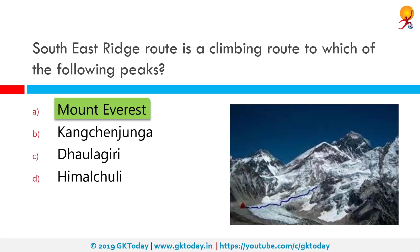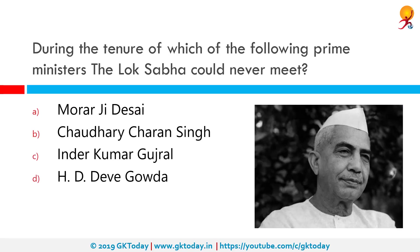During the tenure of which of the following prime ministers could the Lok Sabha never meet? That would be Charan Singh, who served as the fifth Prime Minister of India between 28th July 1979 and 14th January 1980 — less than six months. Historians frequently referred to him as the champion of India's peasants.